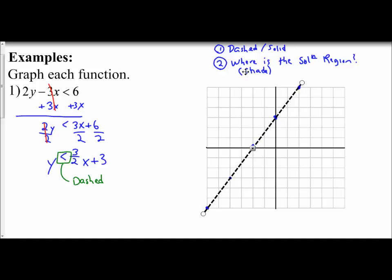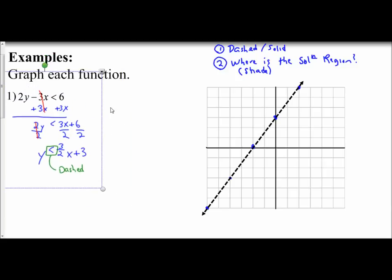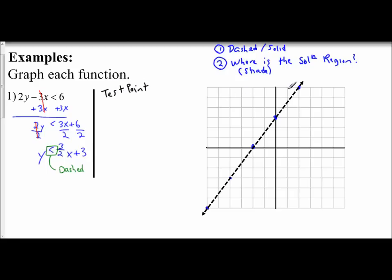Next is: where do I shade? Where is my solution region? There are two ways to go about this. The first is the algebraic approach, which tells you to test a point. Pick a point that is not on the line. Looking at my line, the easiest point that is not on the line is (0, 0) — it's the easiest number to plug in and it's not on my line. So my test point is (0, 0). Plug this in for x and for y.